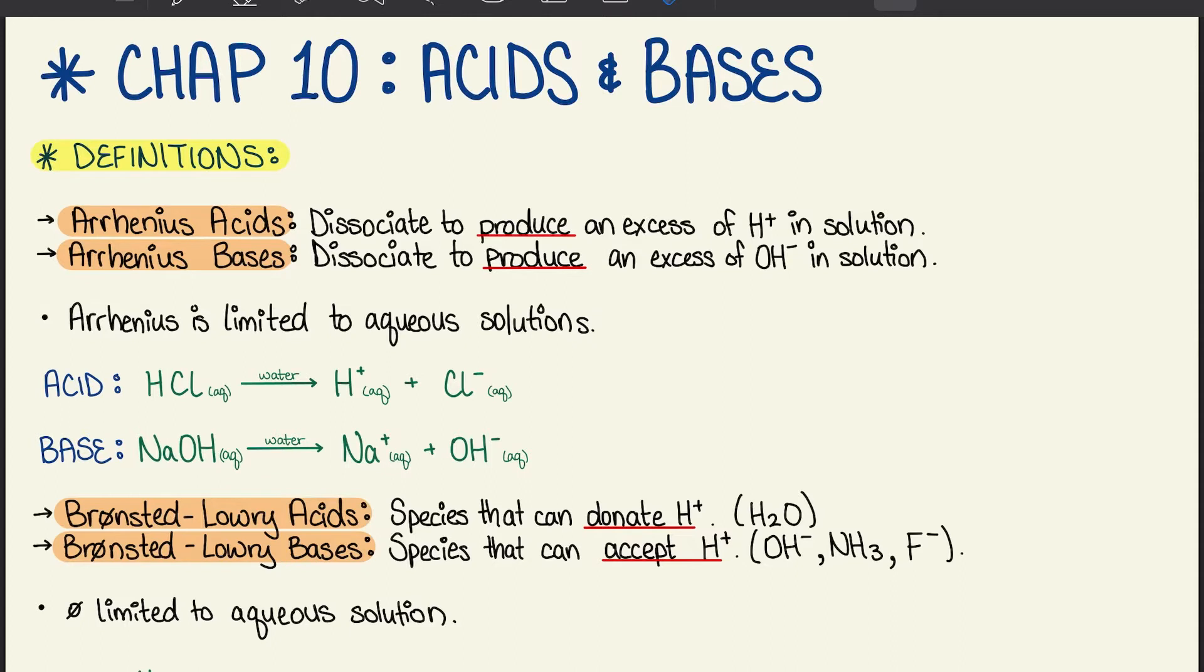For an acid, we have HCl aqueous, which dissociates in water to produce H+ aqueous plus Cl- aqueous. Same thing with base: NaOH will dissociate in water to produce Na+ and OH-.